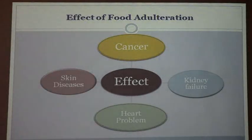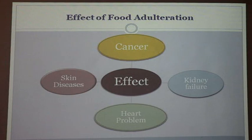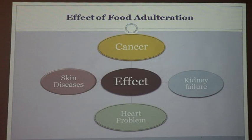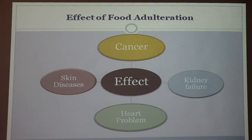I have also shown the effects of food adulteration. What are the effects of consuming adulterated foods? Cancer — if we take adulterated food items, cancer may attack us. Then kidney failure, heart problems, and skin disease. These are the ultimate results of taking adulterated food items.